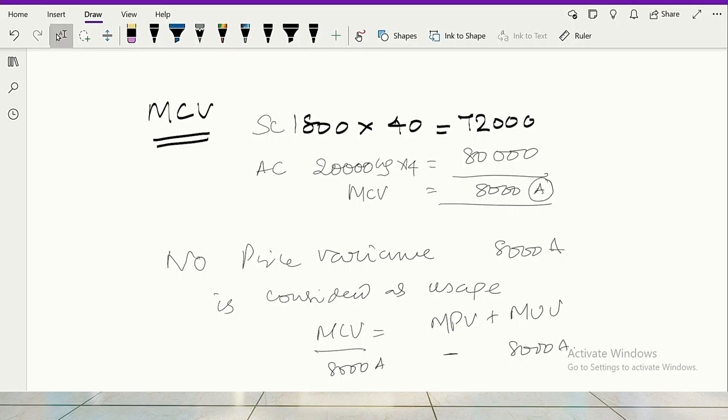In a traditional method, profit as per original budget, take all the variances computed, plus or minus, and then you will arrive at the actual profit, then tally it with the actual profit statement. So there our focus is on focusing on the calculations of the variances traditionally.